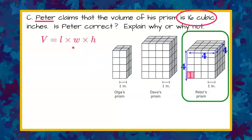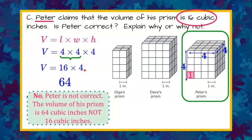So when we're doing length times width times height, 4 times 4 times 4, 4 times 4 is 16, times that last 4 gives me 64. So is Peter correct? No, Peter is not correct. The volume of his prism is 64 cubic inches, not 16 cubic inches. It's likely that he added his measurements rather than multiply.